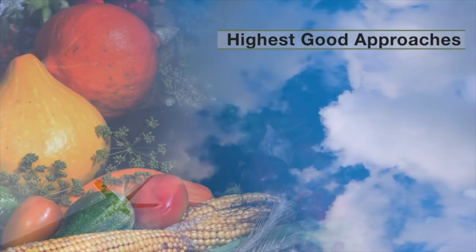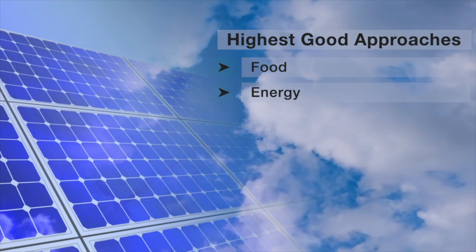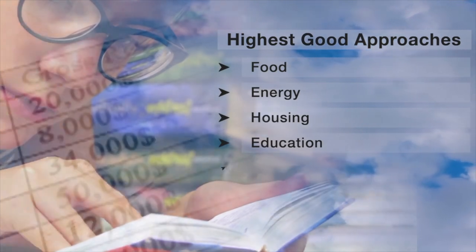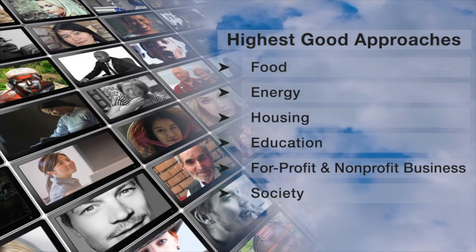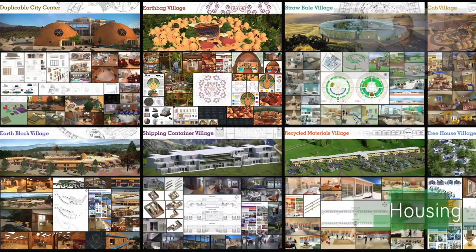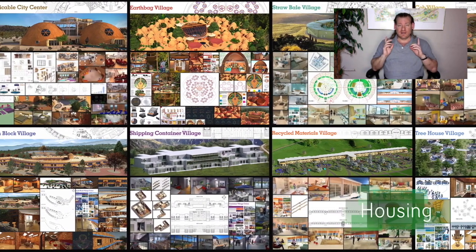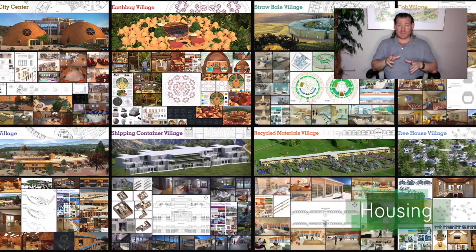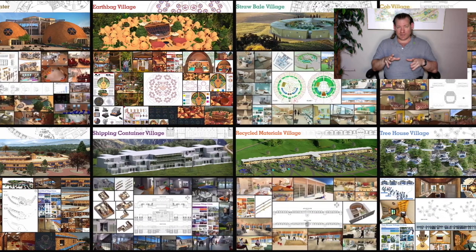This includes highest good approaches to food, energy, housing, education, for-profit and non-profit business creation, society, and true earth stewardship. My name is Jay Sable and I'm the Executive Director of the One Community 501c3 nonprofit organization. This is the July 2nd, 2023 edition of our Weekly Progress Update, and today what I want to talk about is maximizing sustainable yields.